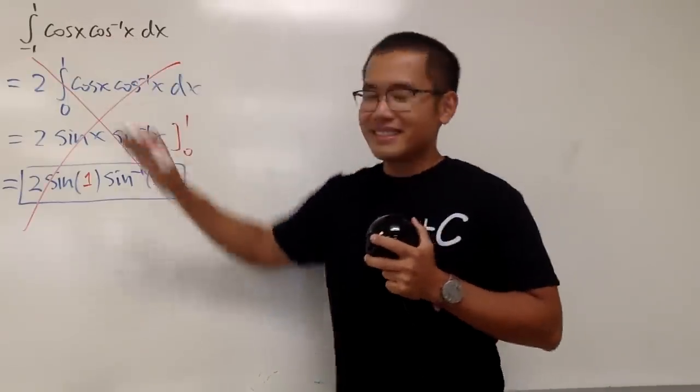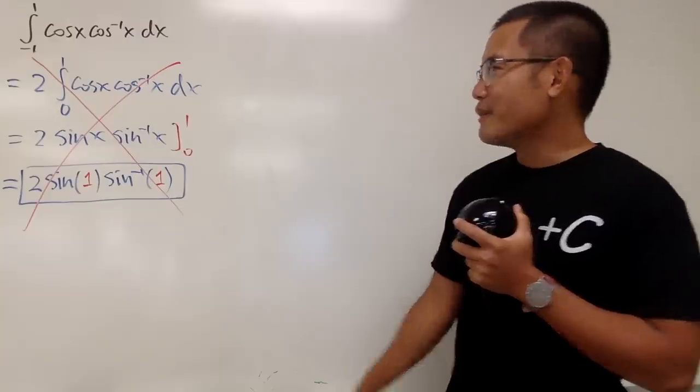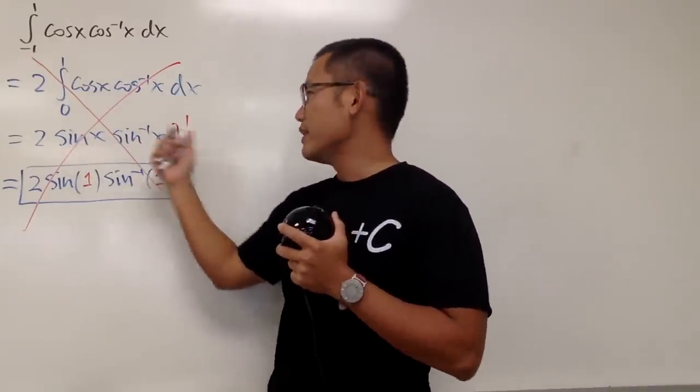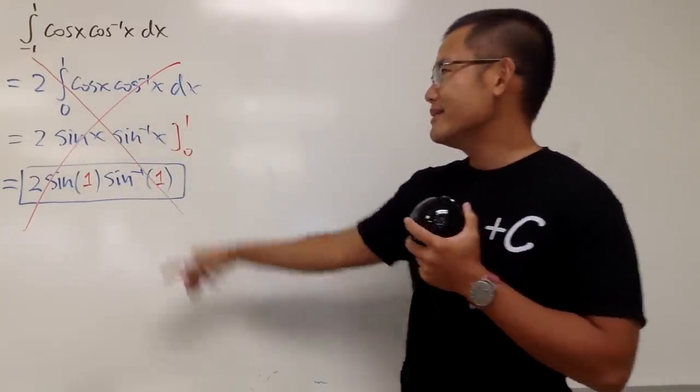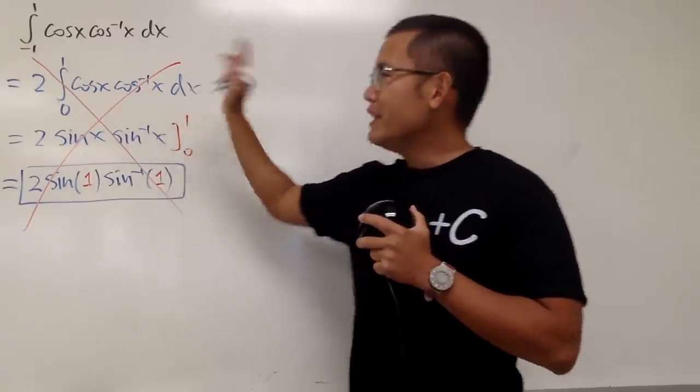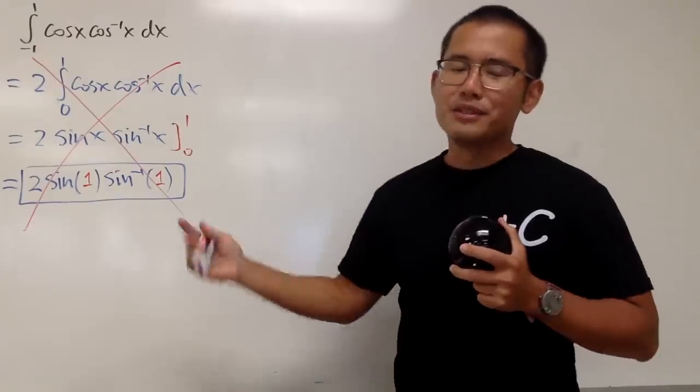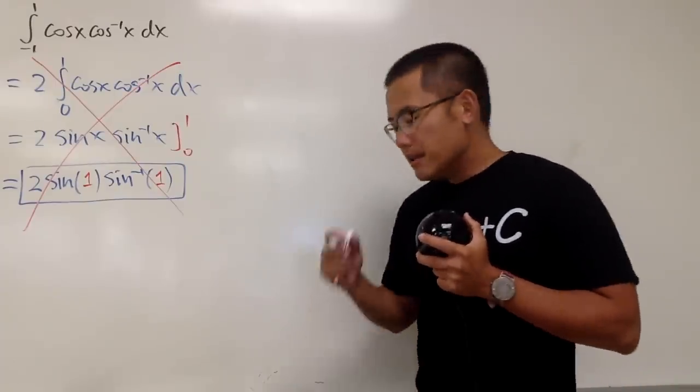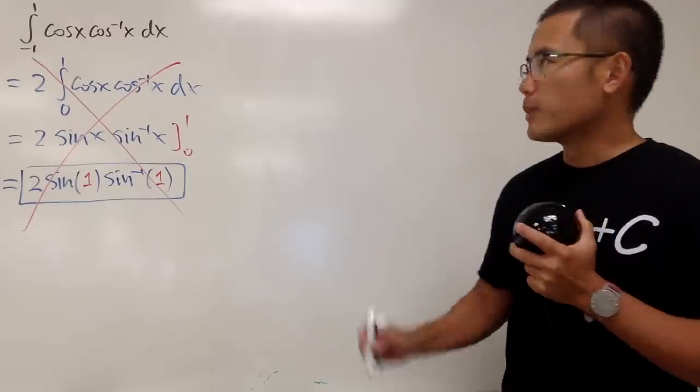Cosine, the inverse cos is not even even, right? And of course, when we integrate a product of two functions, we cannot just integrate the first and then integrate the second. And the worst part is the integral of inverse cos is not inverse sin, right? So it's just so wrong in so many ways. It's okay, because I will show you guys a legitimate way to do this.